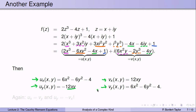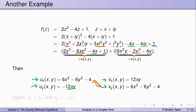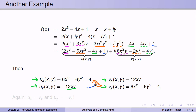Let's see what happened. Looking at ux and vy, we find again that ux equals vy. Looking at uy and vx, they are opposites of each other. So again ux equals vy and uy equals minus vx. This function was much more complicated than the previous example, so now we're starting to think this was not coincidence.